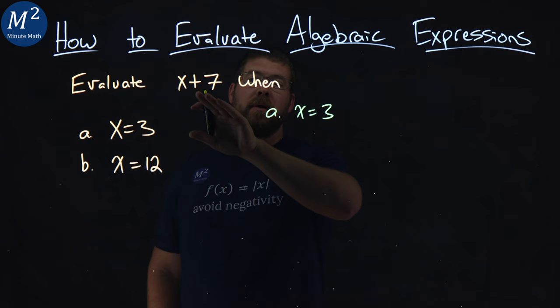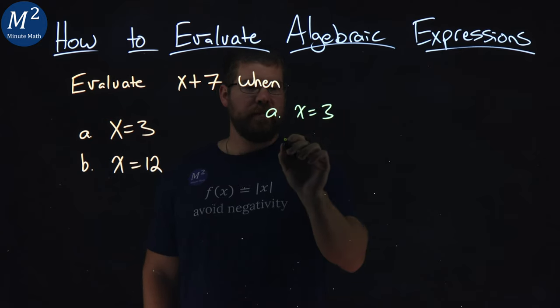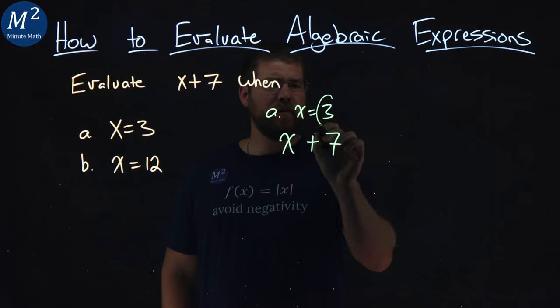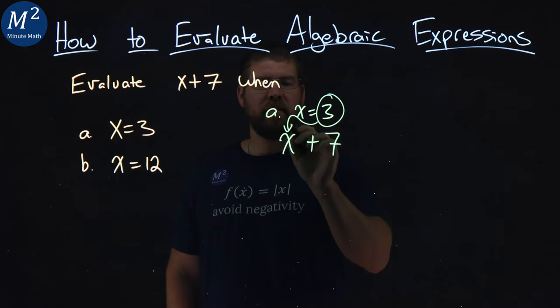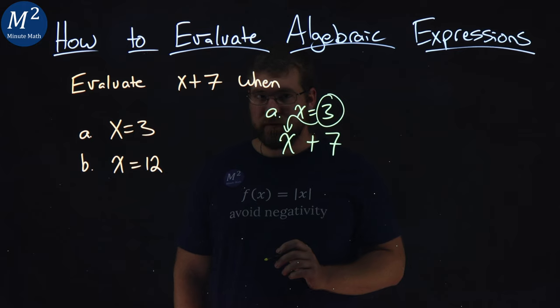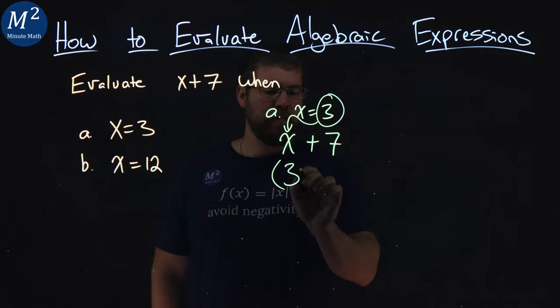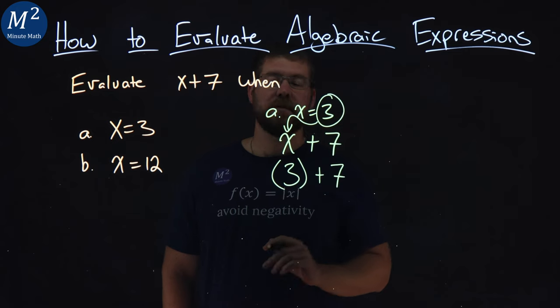What I want to do is take my algebraic expression x plus 7, and I'm going to substitute that 3 right in for the x. So instead of the x now, I'm going to put a 3: 3 plus 7.